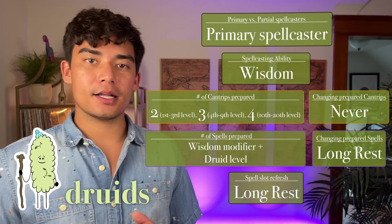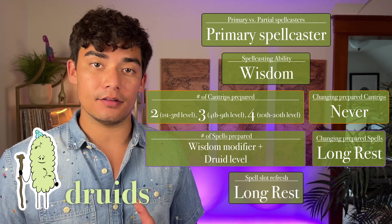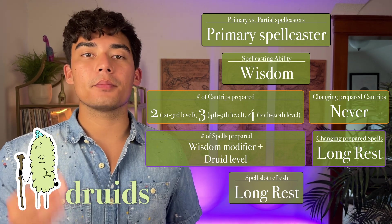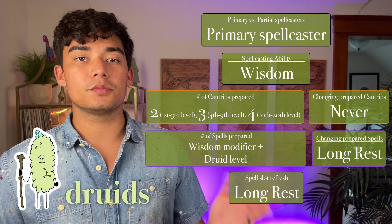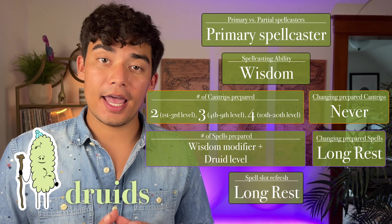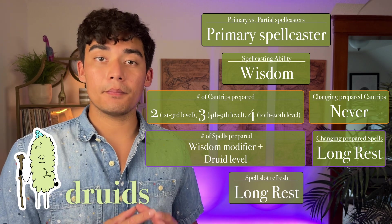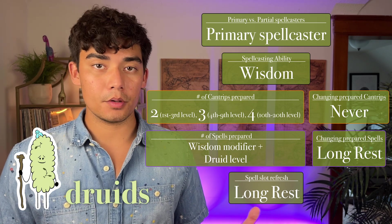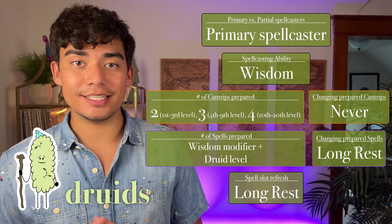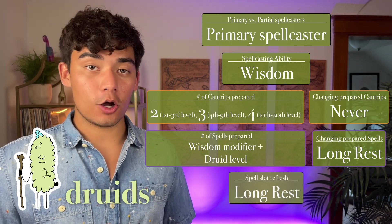Druids are primary spellcasters, meaning they get access to level 1 through 9 spell slots as they level up. Their spellcasting ability is wisdom. The number of cantrips they can prepare increases from 2 to 4 as they level up, and druids cannot change their prepared list of cantrips. The number of spells a druid can prepare is their wisdom modifier plus their level in druid. They can change their prepared spell list after every long rest, and spell slots refresh after every long rest.